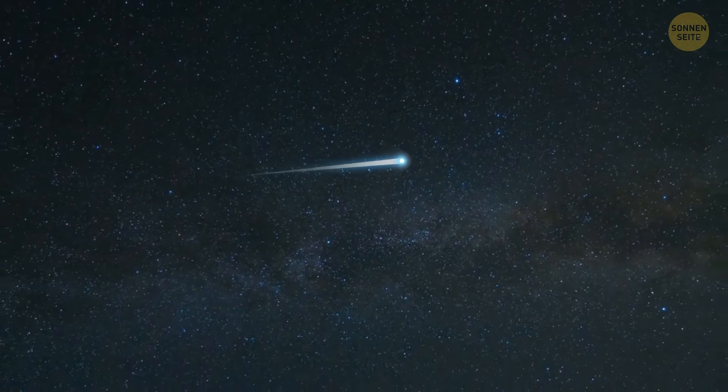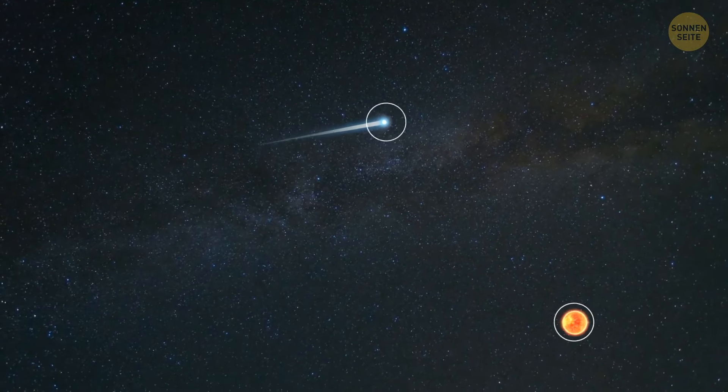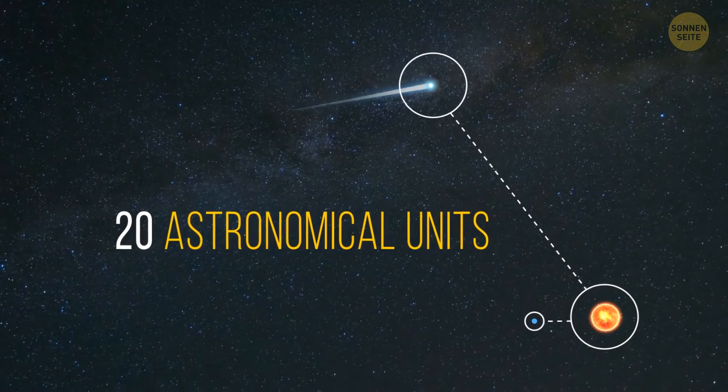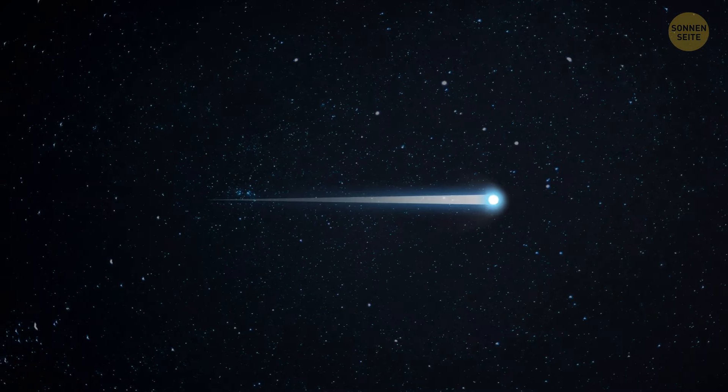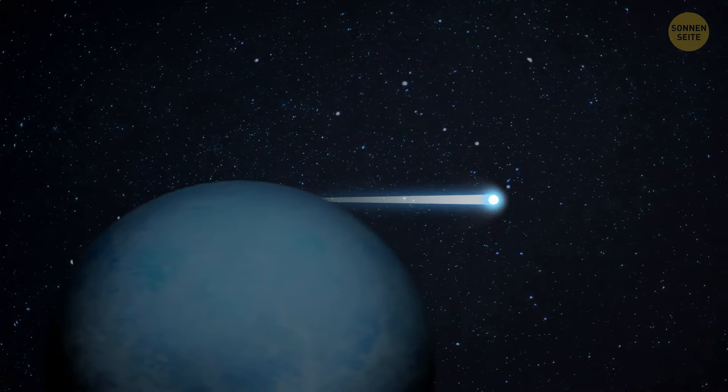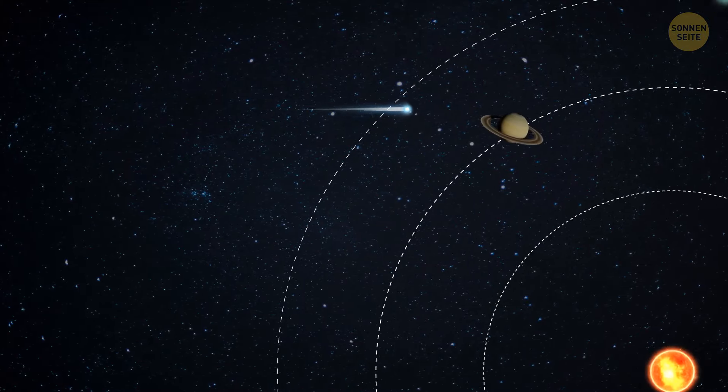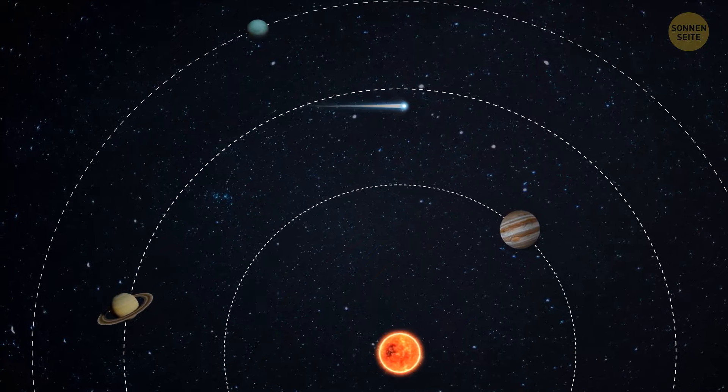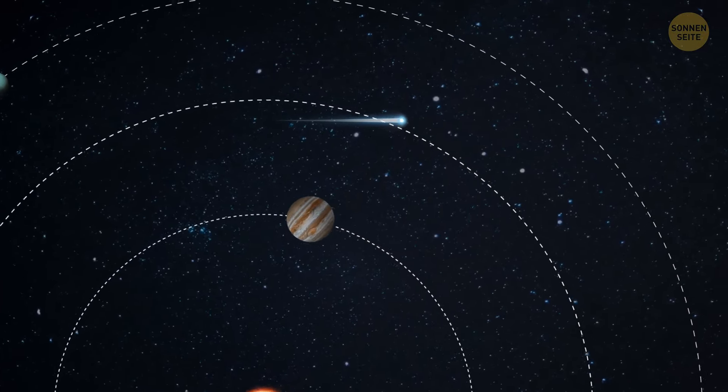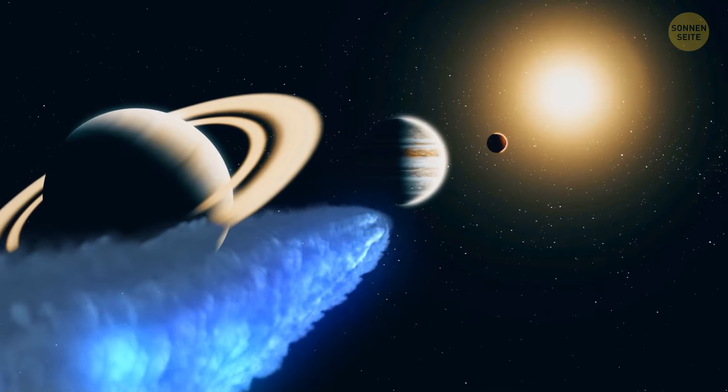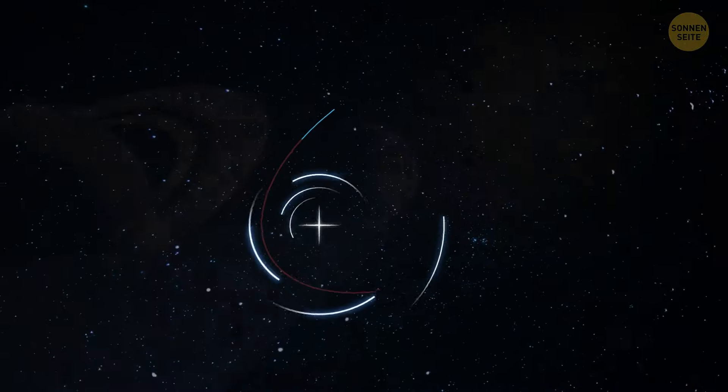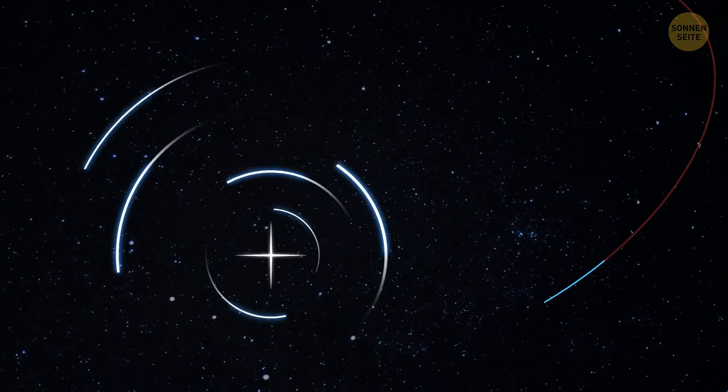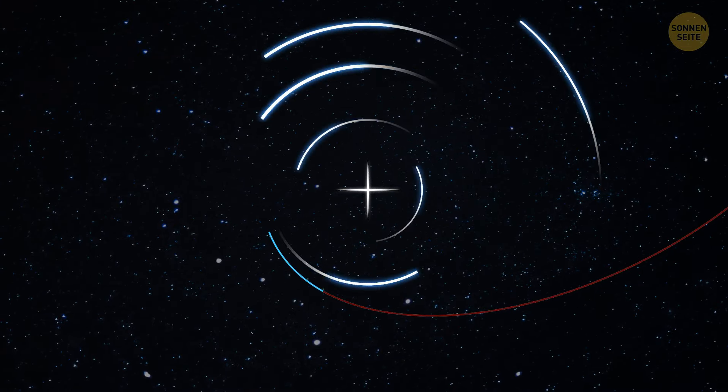Fortunately, Bernardinelli-Bernstein isn't going to approach Earth. Right now, the comet is about 20 astronomical units away from the sun. That's 20 times the distance from Earth to the sun. It means the comet will soon cross the orbit of Uranus. In 2031, it'll be 11 astronomical units away from our star. That's just outside Saturn's orbit. This is going to be the closest Bernardinelli-Bernstein will approach the sun. Then it will begin its flight back to the edge of the solar system. But the comet is bound to return again. It'll move away from the sun and slow down until the star's gravity pulls it back. Then the comet will make another circle around our solar system. But that will take about 3 million years.